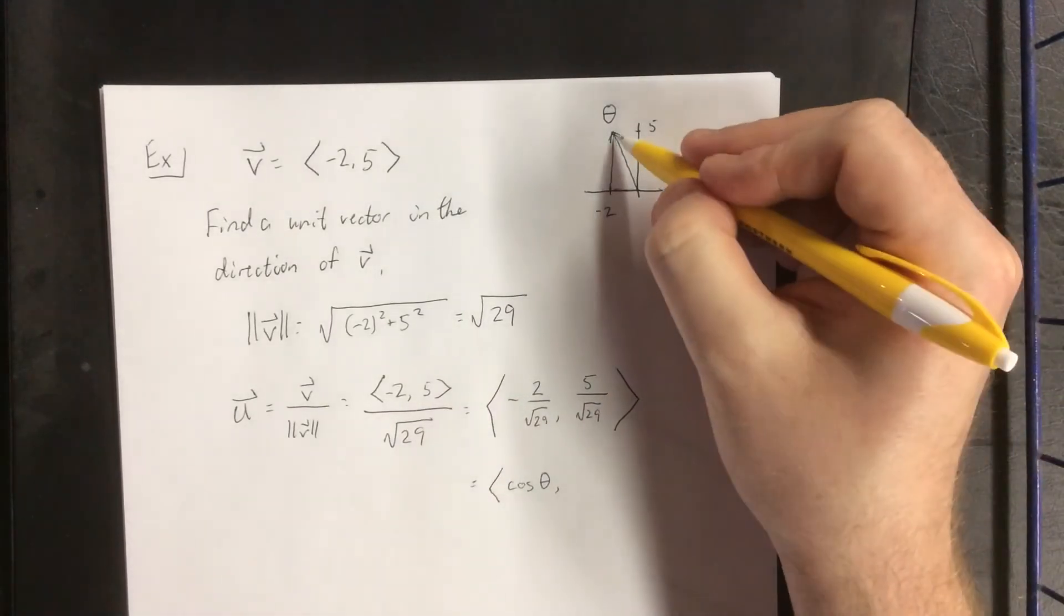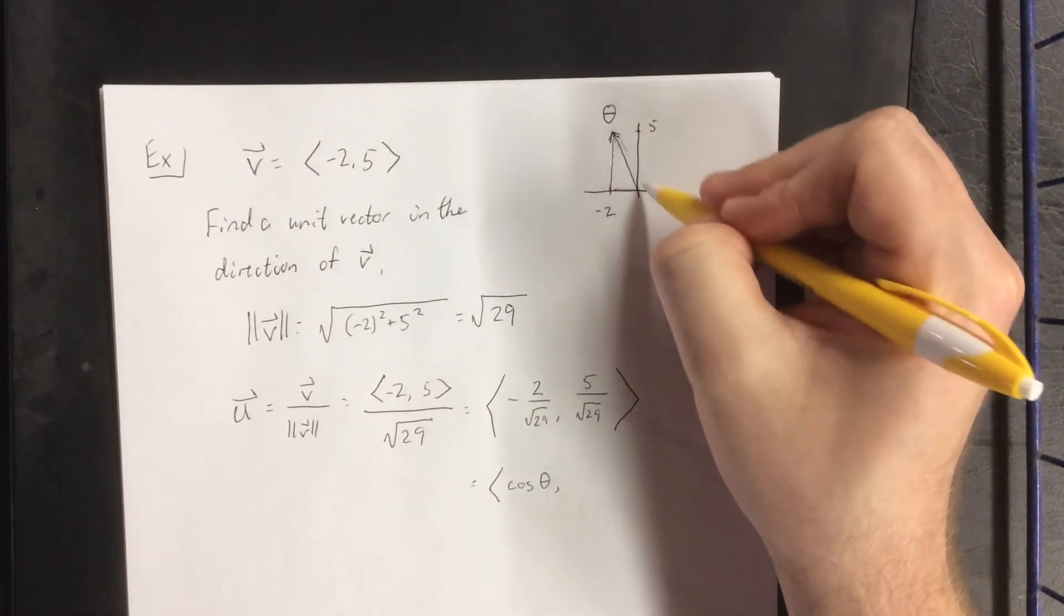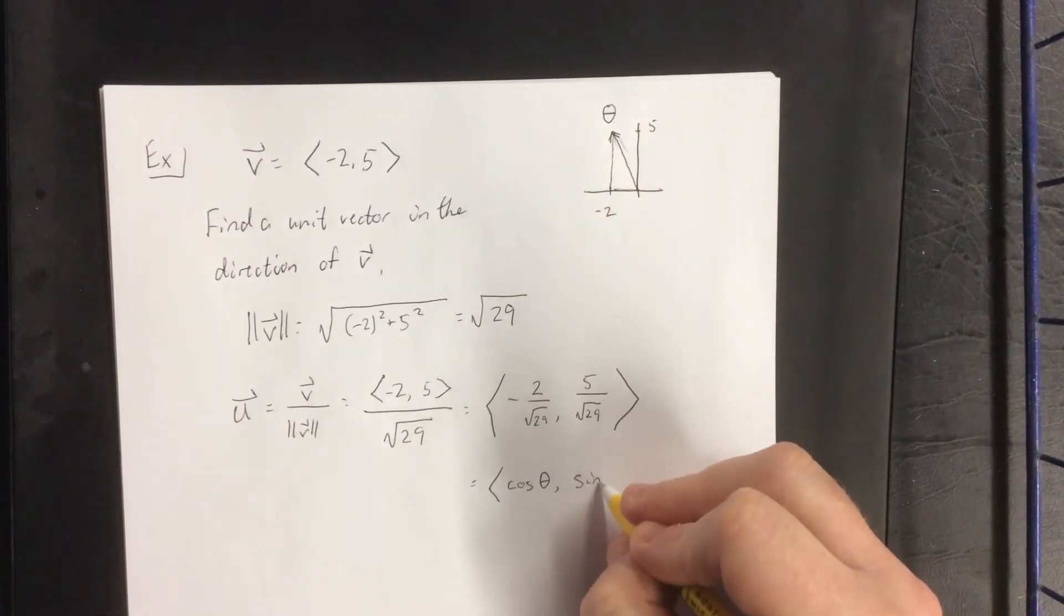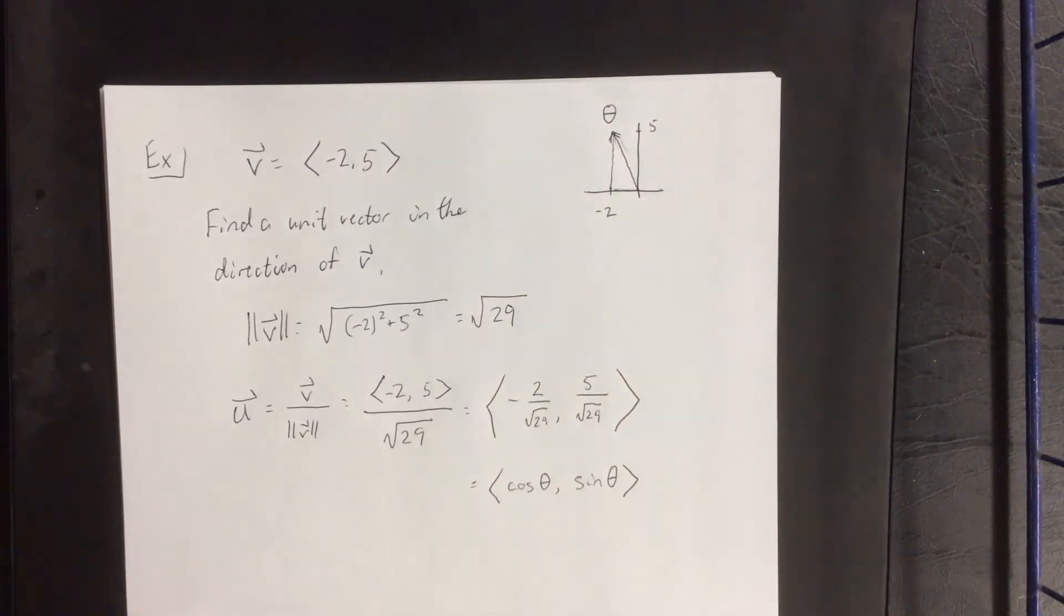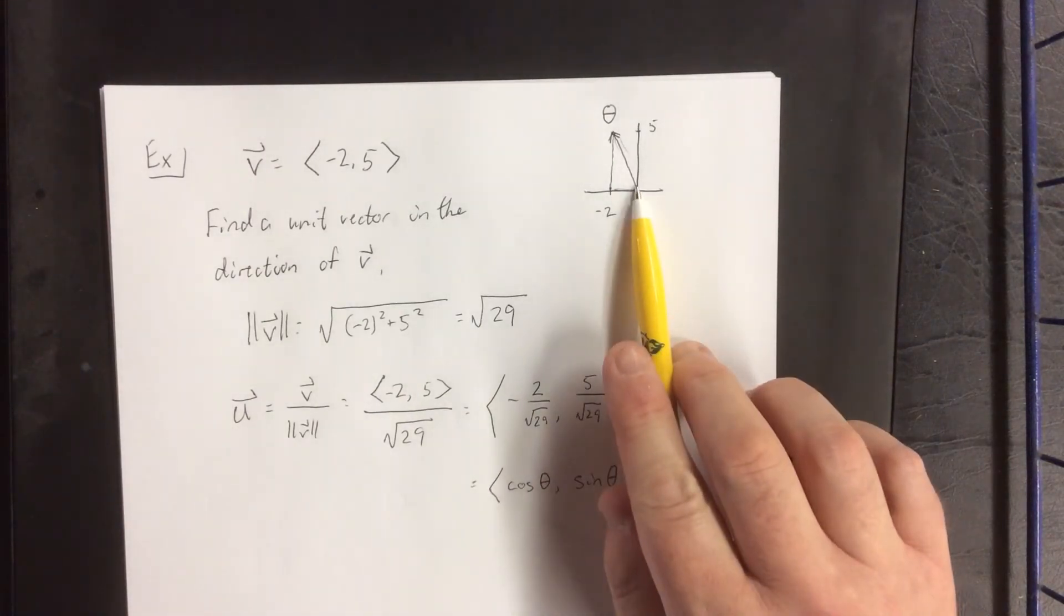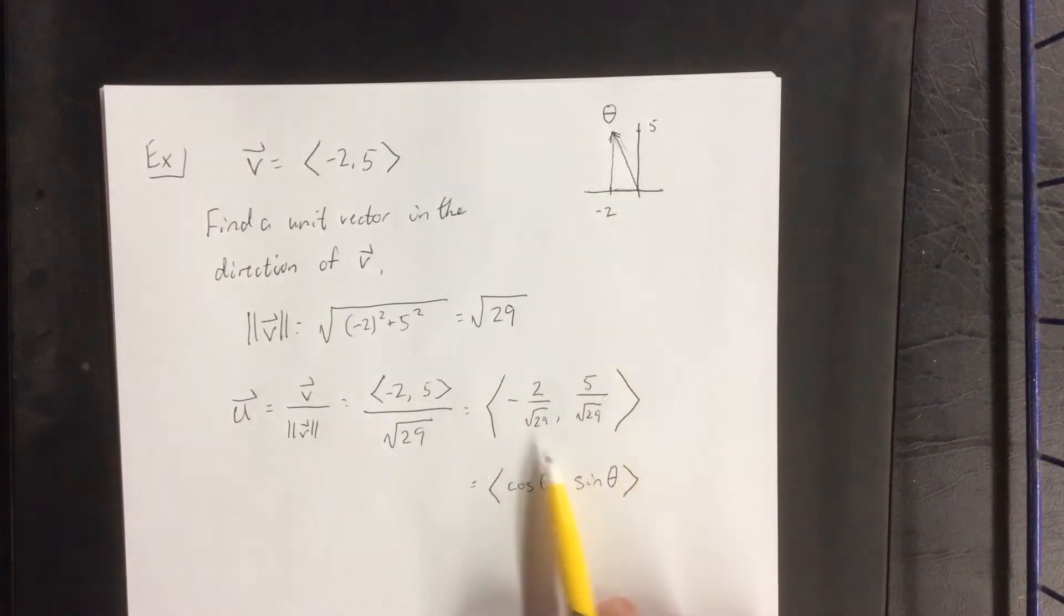5 over the square root of 29 is the opposite side over the hypotenuse. This is the sine of theta. One reason these are called unit vectors is because if this is a terminal point with initial point at the origin, it's a point on the unit circle. This gives rise to what we call the polar representation of a vector.